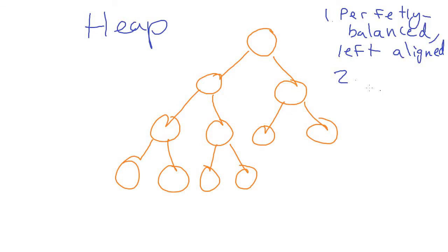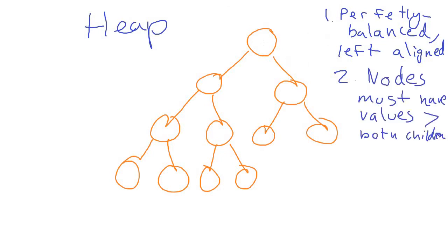The other rule is that nodes have to have values greater than both of their children. If I put a number like 88 in a node, then both the left child and the right child have to have values less than 88 — that makes it a max heap. For all of this, we could just do it the other way around, in which case it would be a min heap. We'll stick with max heaps to make it a little less confusing.